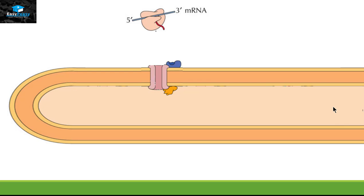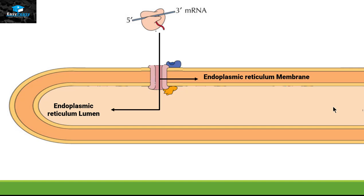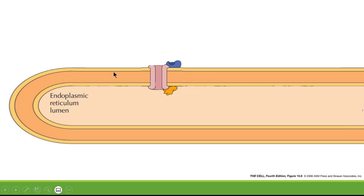Proteins that have the signal sequence have two different destinations inside the endoplasmic reticulum: one is called the endoplasmic reticulum lumen and the other is called the endoplasmic reticulum membrane. Let's take a look at how protein is transported into the endoplasmic reticulum lumen first.